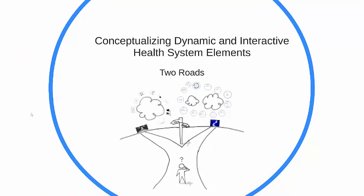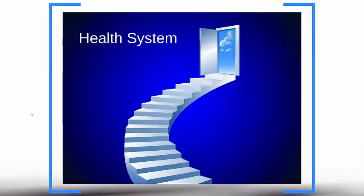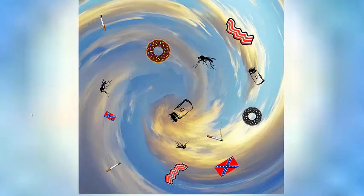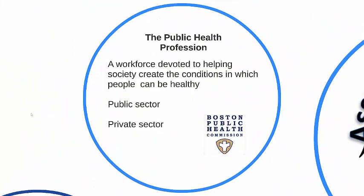Let's go back to the branch in the road. We took the road on the left and saw the sickness care system. Now let's take the road on the right and see something bigger: the health system. We're still surrounded by this whirlwind of bacon, mosquitoes, donuts, cigarettes, and racism. We can go forward to the public health profession — a workforce devoted to helping society create the conditions in which people can be healthy. The profession works in both the public and private sector. There are 60,000 districts on the planet, and just about every one has a health department — for instance, the Boston Public Health Commission. These units already exist.